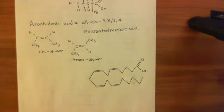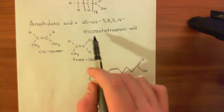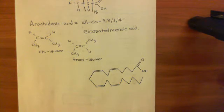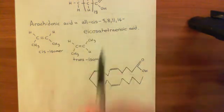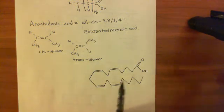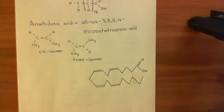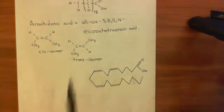Organic chemists, when they use 'arachidonic acid,' sometimes mean any old icosatetraenoic acid. But biologists, people in medicine, and nutritionists — when they talk about arachidonic acid, they mean this specific molecule: all-cis-5,8,11,14-icosatetraenoic acid. Organic chemists generally don't care which isomer it is, i.e. where the double bonds are. So beware of that. When we talk about arachidonic acid in medicine, we mean this exact molecule.